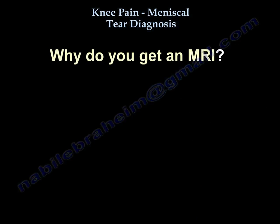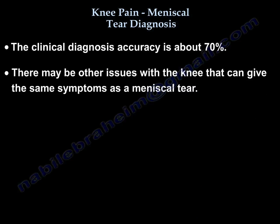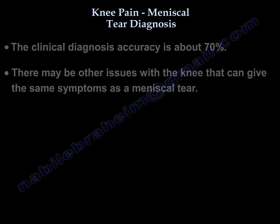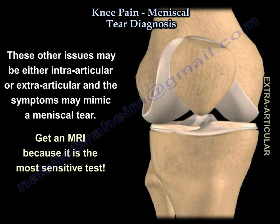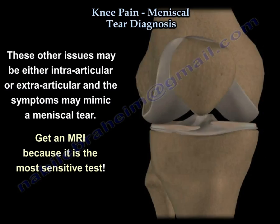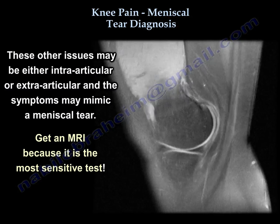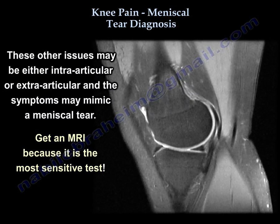So why do you get the MRI? Because clinical diagnosis accuracy is about 70%, and because there are other issues in the knee that can give the same symptoms as a meniscal tear. These things can be intra-articular or extra-articular, and the symptoms will mimic a meniscal tear. The MRI is the most sensitive test.